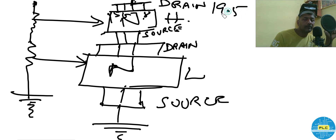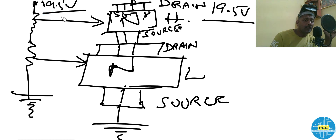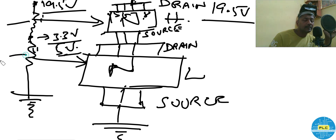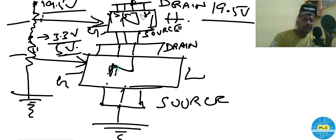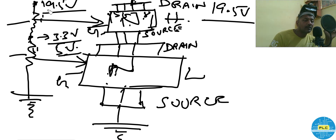The first MOSFET Drain is connected to 19.5V supply. In the voltage divider, 19.5V connects at the top — but the result here you will get is 3.3V, or 5V, or whatever it may be, according to these two resistors. Here, depending on the MOSFET, there is one more connector — that is the Gate. The output of the first MOSFET goes to the second MOSFET's input, and the second MOSFET's output goes to Ground — just like a voltage divider.